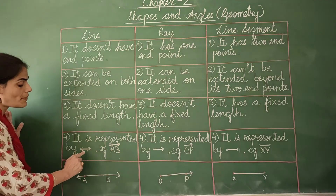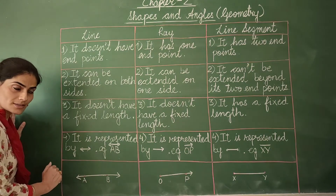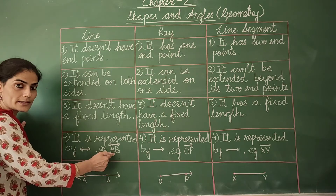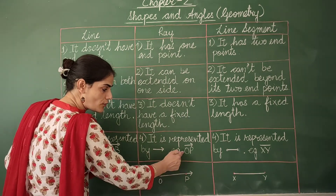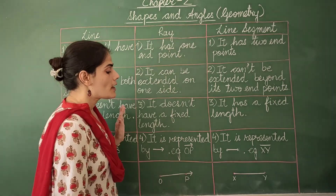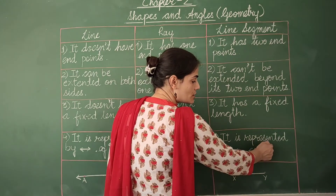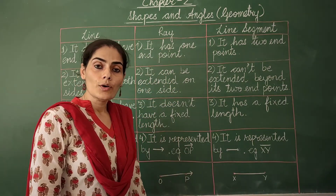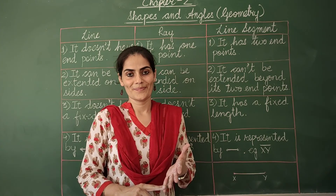A line is represented by a horizontal line with two arrows on both sides. For example, line AB is written with the symbol over AB. A Ray is represented with one arrow — write the points, for example OP, with the ray symbol over them, first writing the point of origin. A line segment XY is represented by writing XY with a bar symbol over it. I hope you all have understood the meaning as well as the differences between these three. Thank you.